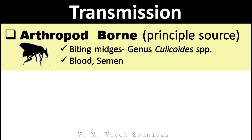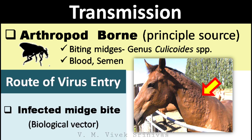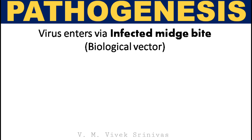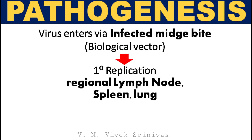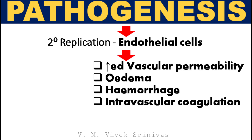Transmission. This is an arthropod-borne viral infection. Biting midges like Culicoides species can act as the principal vector of this virus. Blood and semen from infected animals can also be a source of this virus. The virus enters the host through an infected midge bite, which is a biological vector. The incubation period is usually 7 to 14 days from the entry of the virus, but may be as short as 2 days. Following entry of the virus, initial replication occurs in the regional lymph node, spleen, and lung, followed by viremia, and next replication is at the endothelial cells, which may lead to increased vascular permeability, edema, hemorrhage, and intravascular coagulation.